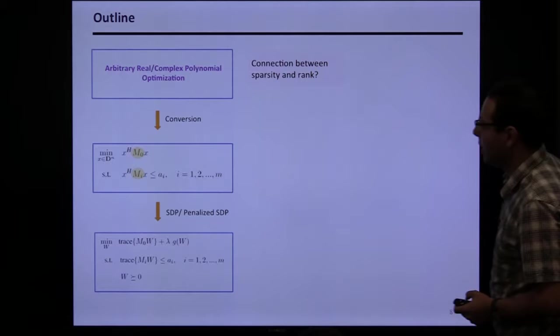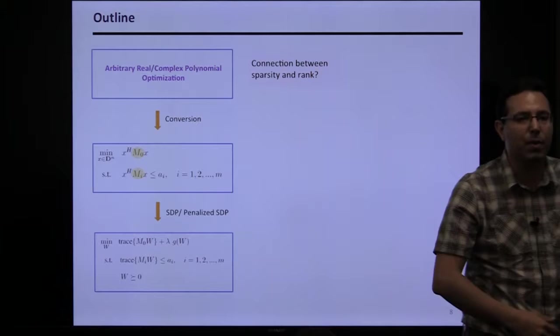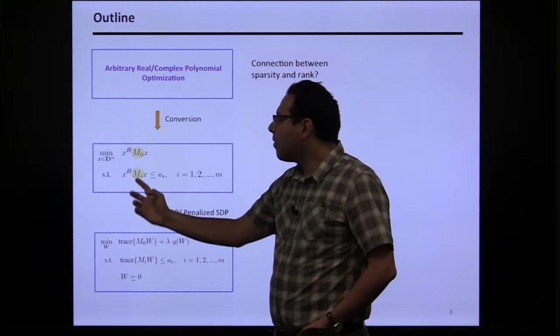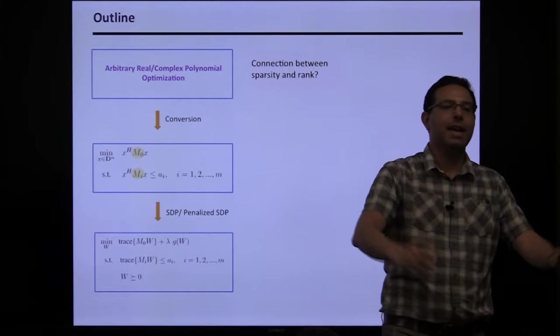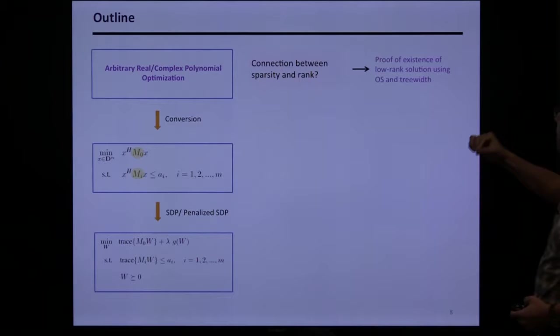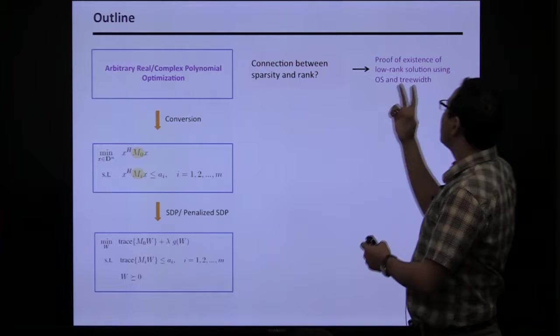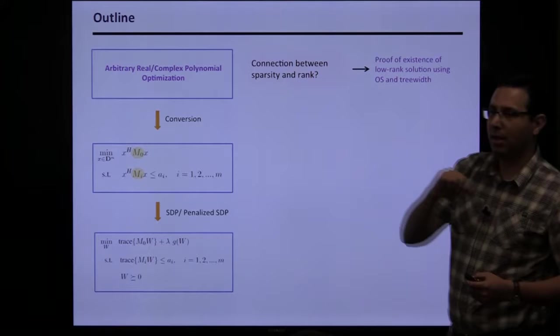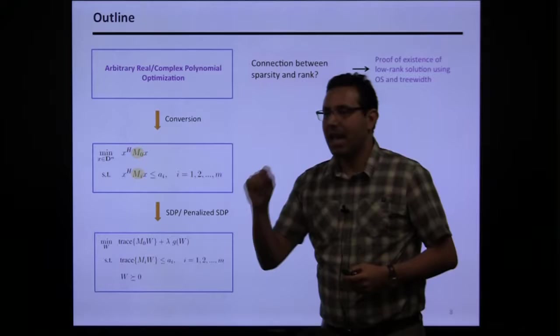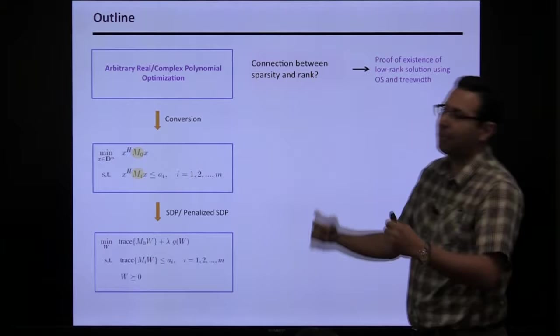The first question: if we use SDP, what is the rank of W in practice? We know that real-world systems have natural sparsity. If I know the matrices are sparse, can I upper-bound the rank of W? If rank is 1, great; rank 2 is okay; but if rank is n, the idea fails completely. We use ideas in graph theory — two notions called OS (ordered set) and treewidth — to upper-bound the rank of W.